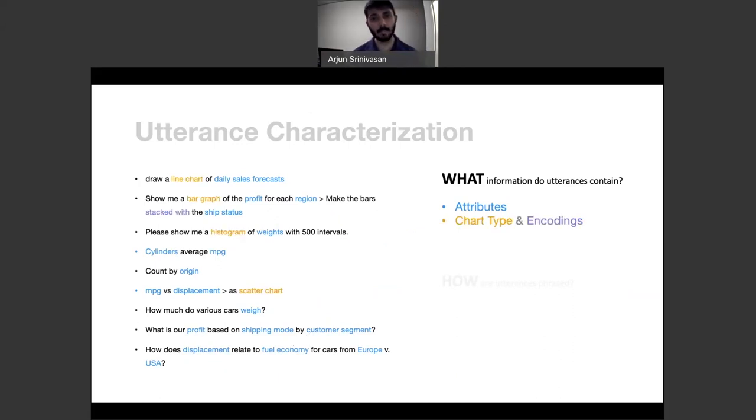Alternatively, some utterances explicitly listed the chart type or encoding channels, or included references to aggregation functions like average, mean, sum, count, and so on. In some specific cases, the utterances even contained references to design choices that participants wanted to instill into the chart.